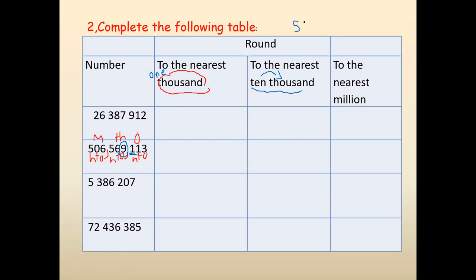We compare it to the best friend, which is five. One — is it less or more than five? It's less. So I will keep nine the same. All the digits I will keep them the same till nine, then after nine they will be zeros. So five hundred six million, five hundred sixty-nine thousand.